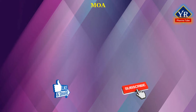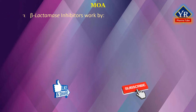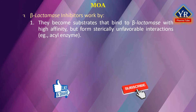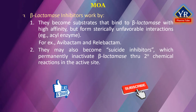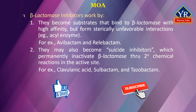Mechanism of action of beta-lactamase inhibitors: Beta-lactamase inhibitors work by one of two mechanisms. Number one, they may become substrates that bind the beta-lactamase enzymes with high affinity but form sterically unfavorable interactions such as the acyl-enzyme — Avibactam and Relebactam work by this method. Number two, they may also become suicide inhibitors which permanently inactivate the enzyme through secondary chemical reactions in the active site — clavulanic acid, sulbactam, and tazobactam work by this process.